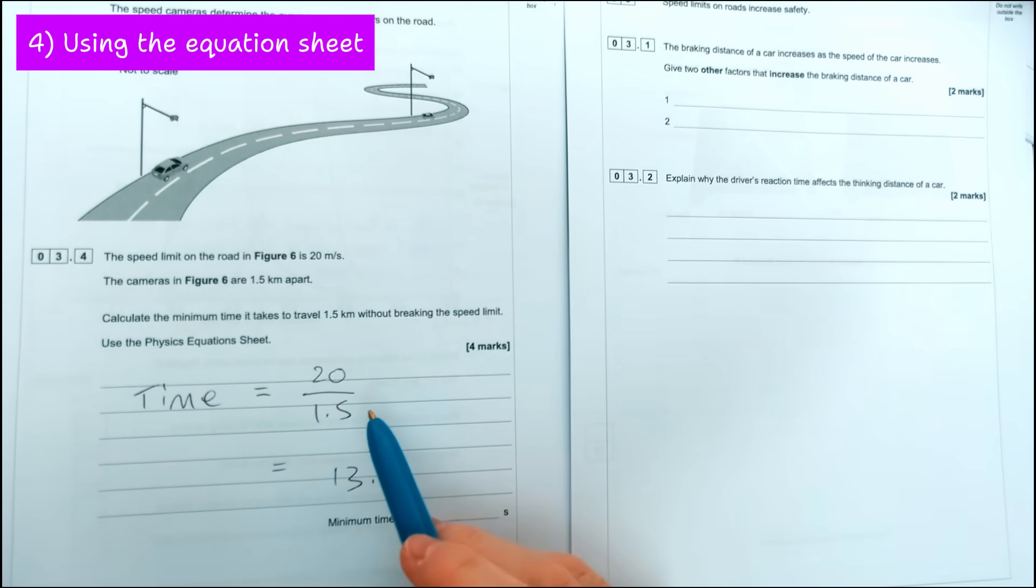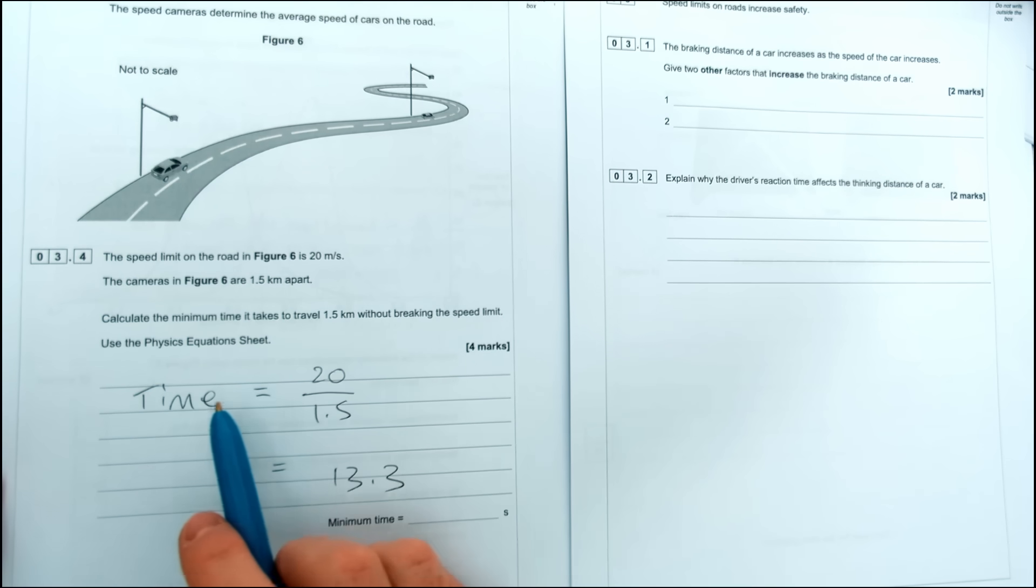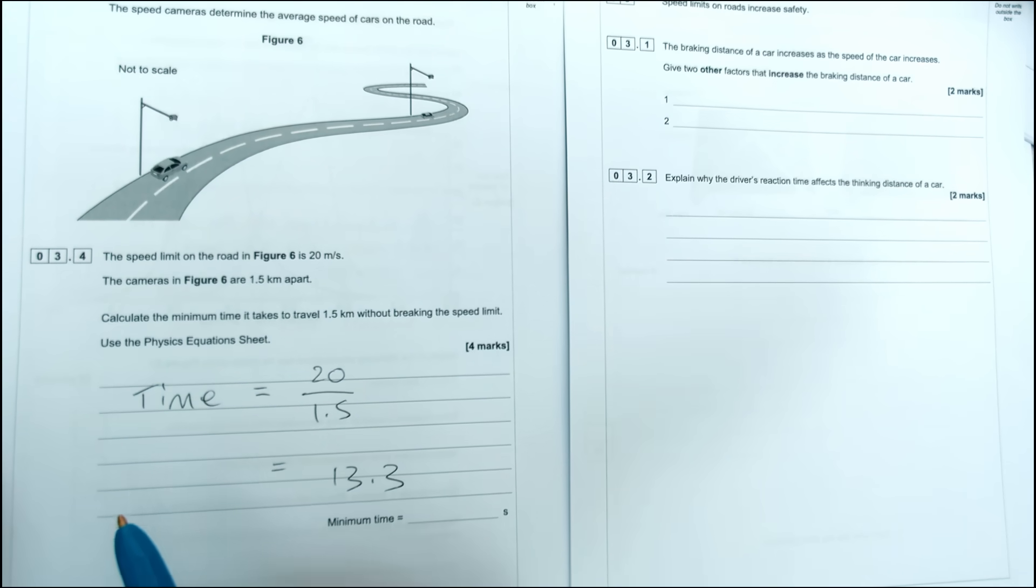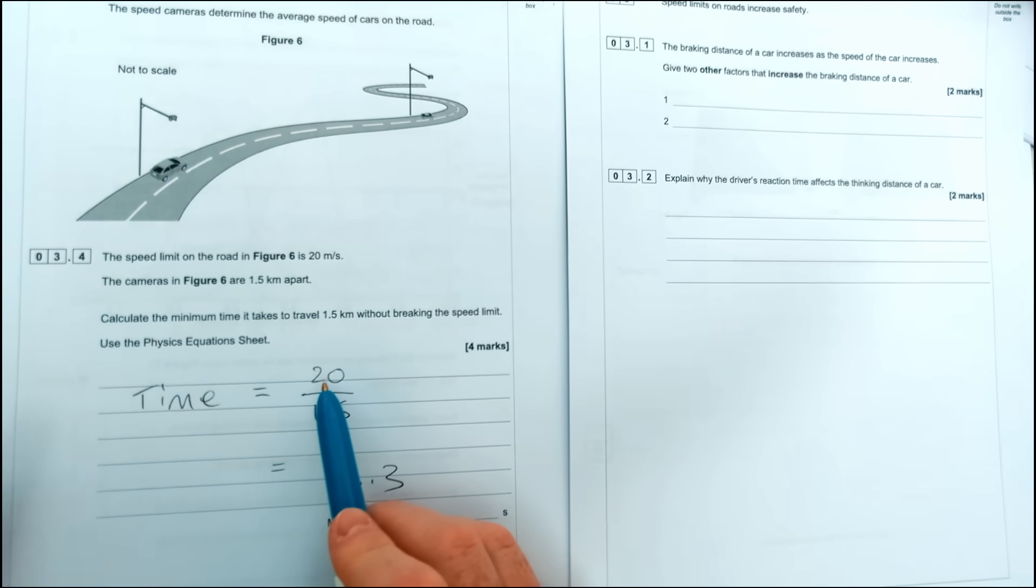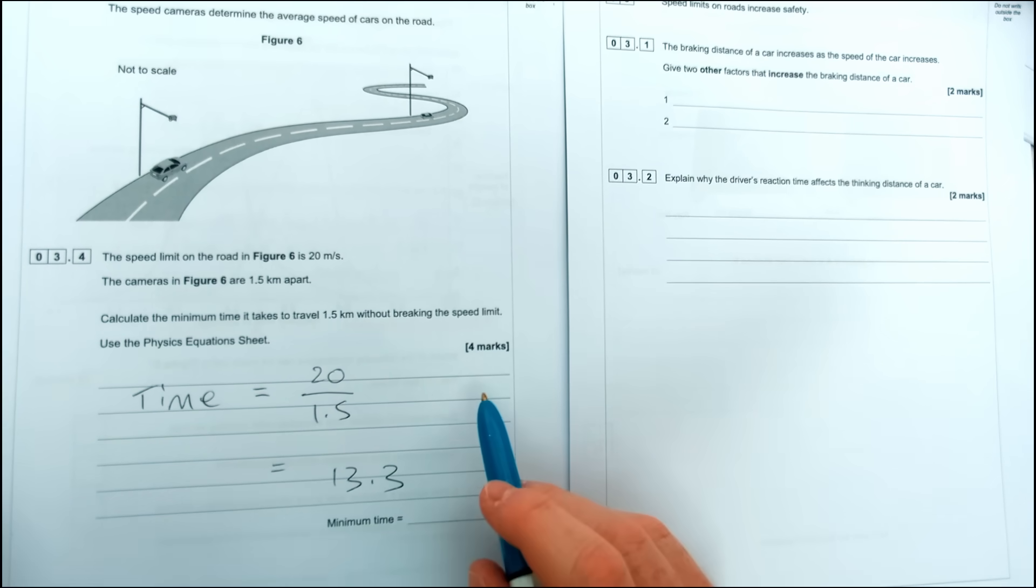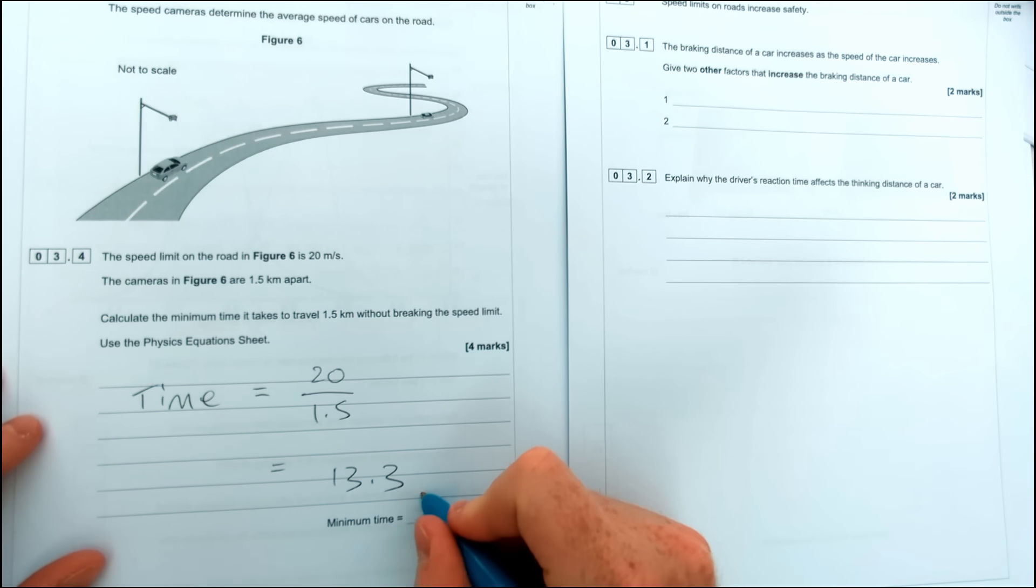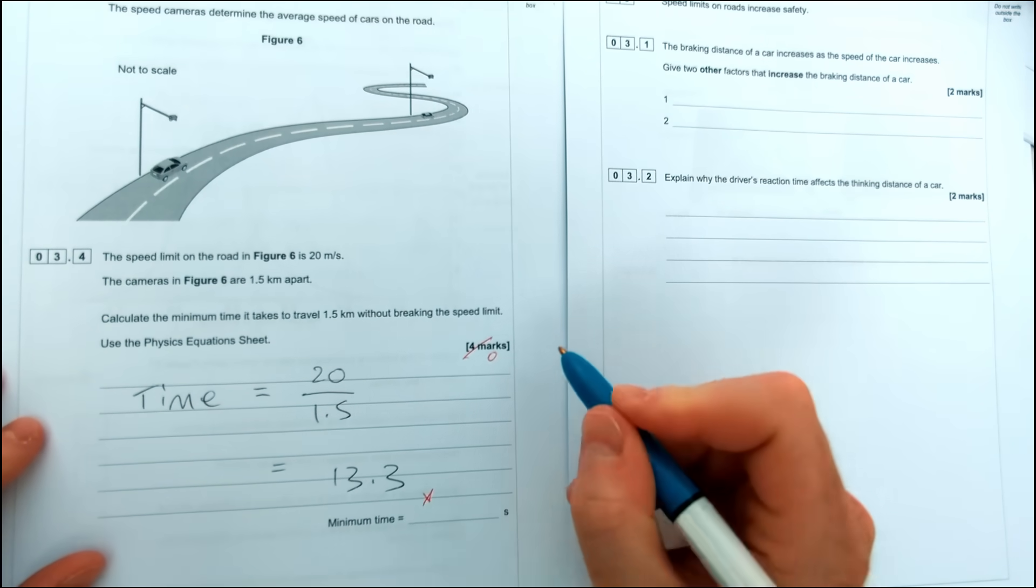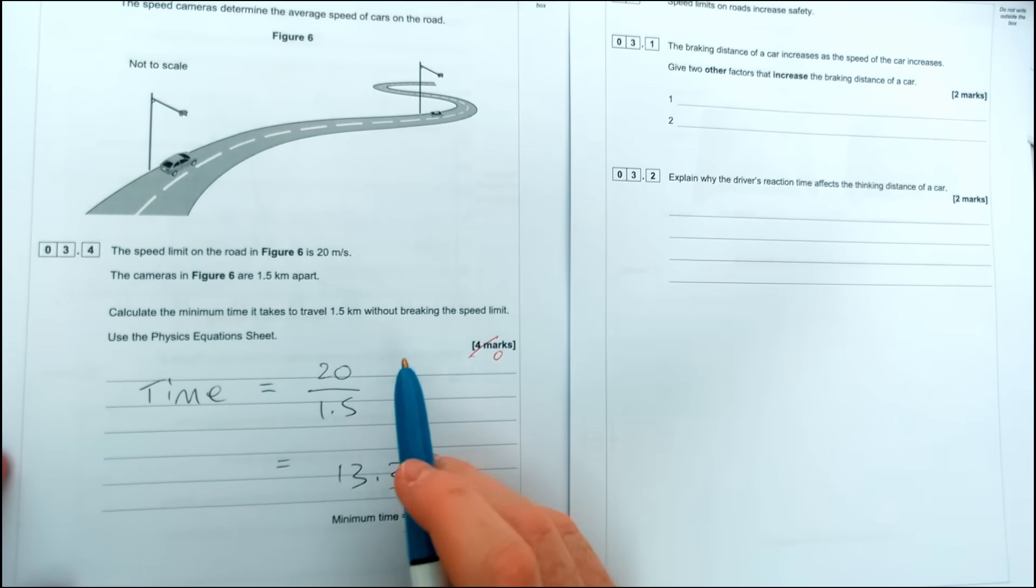For this next question this student has had an absolute mare. They definitely haven't been taught or haven't practiced how to set out equation questions properly because they've done what a lot of students usually do, which is just do the big number divided by the small number and haven't actually looked at what equation to use. So in this question because they've just done the wrong thing divided by the wrong thing, there's going to be zero marks for this question.